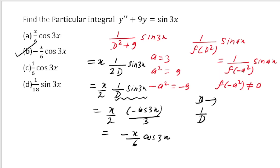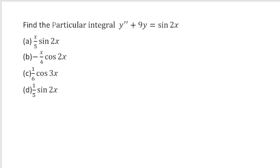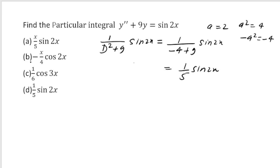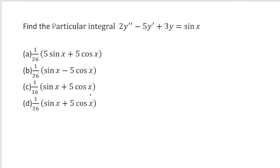Next: find the particular integral 1/(D²+9) of sin(2x). This is a direct question. Here a = 2, a² = 4, -a² = -4. Replacing D² with -4: (-4+9) · sin(2x) = (1/5) · sin(2x). The answer is (1/5)sin(2x), which is option d.